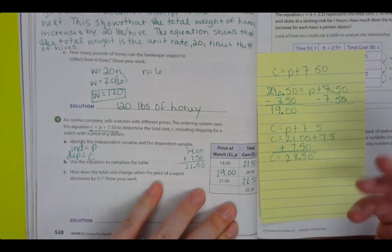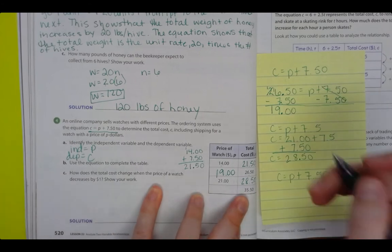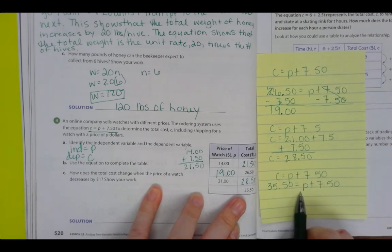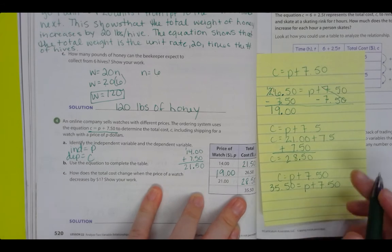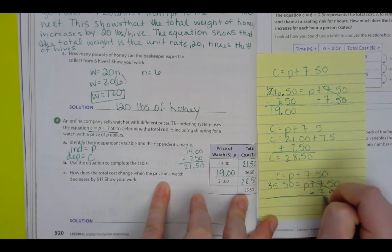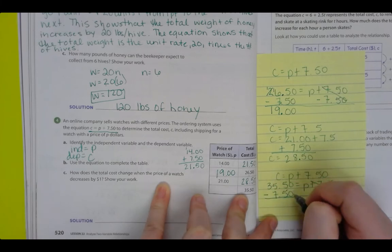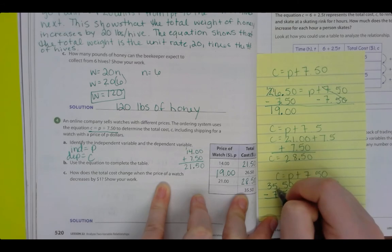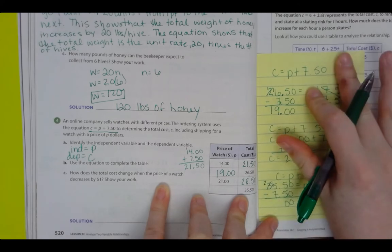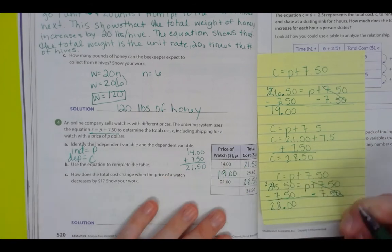All right, the last one. C equals P plus $7.50. Got to isolate my variable. I have to use inverse operations. I'm gonna subtract $7.50 because that's what's gonna get P by itself. What I do to one side, I gotta do to the other. When I'm adding or subtracting decimals, I gotta line up place values. 0 minus 0 is 0, 5 minus 0 is 0, 5 minus 7, nope can't do it. Gotta go next door and borrow. 3 becomes 2, 5 becomes 15. 15 minus 7 is 8. 2 minus 0 is 2. Bring my decimal down. I get $28.